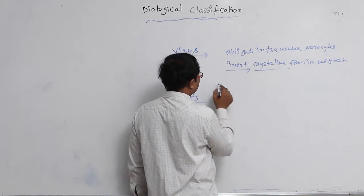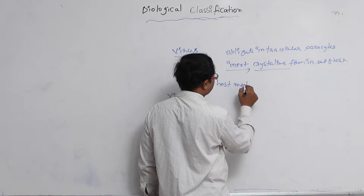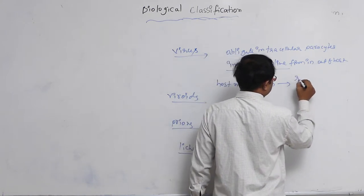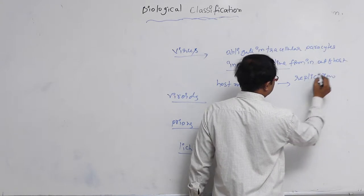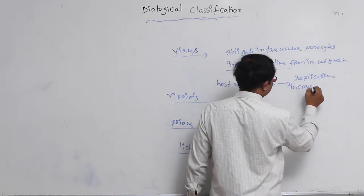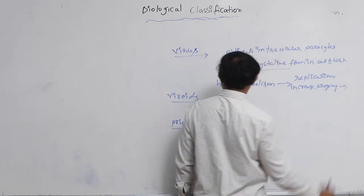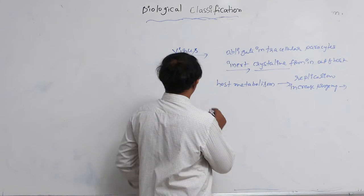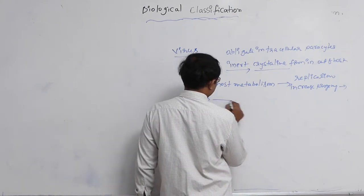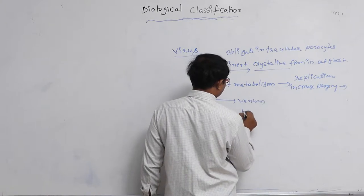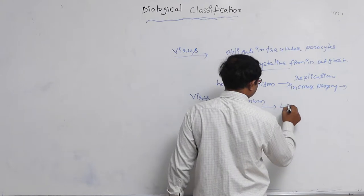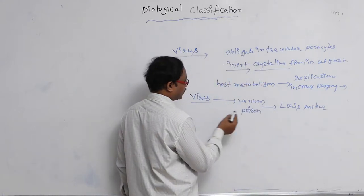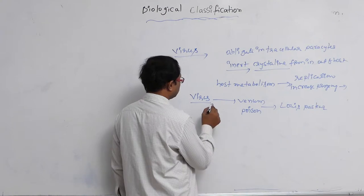Controlling host metabolism and starting the replication process by the rectification process, increasing progeny. So, virus means venom, it means poison. This word is coined by Louis Pasteur scientist for the first time. He proposed that virus means venom, means poison.